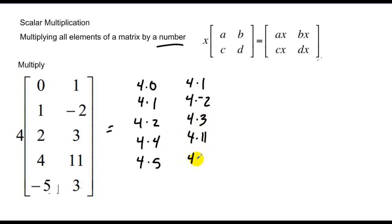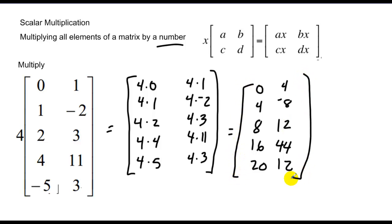The dimensions of this matrix stay the same. You're going to deal with multiplication of two matrices at a later time. So in this case, I have 0, 4, 8, 16, 20, 4, negative 8, 12, 44, and 12. You'll see, once again, dimensions stay the same. Started out as a 5 by 2, we end as a 5 by 2.